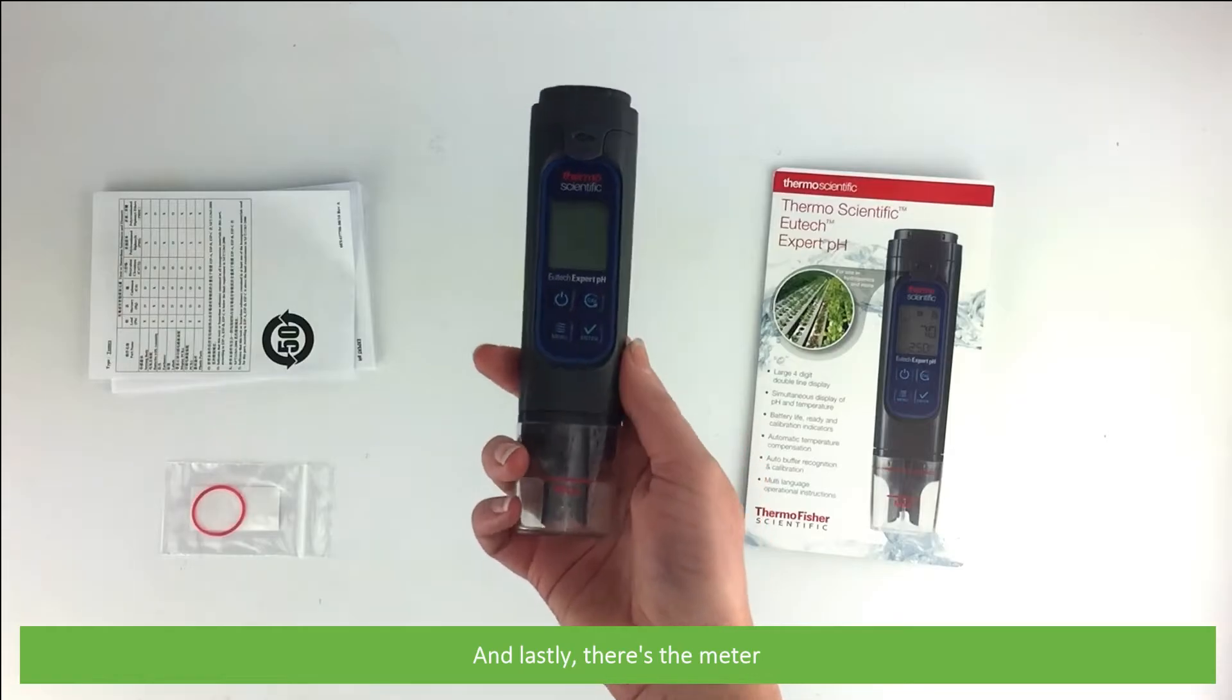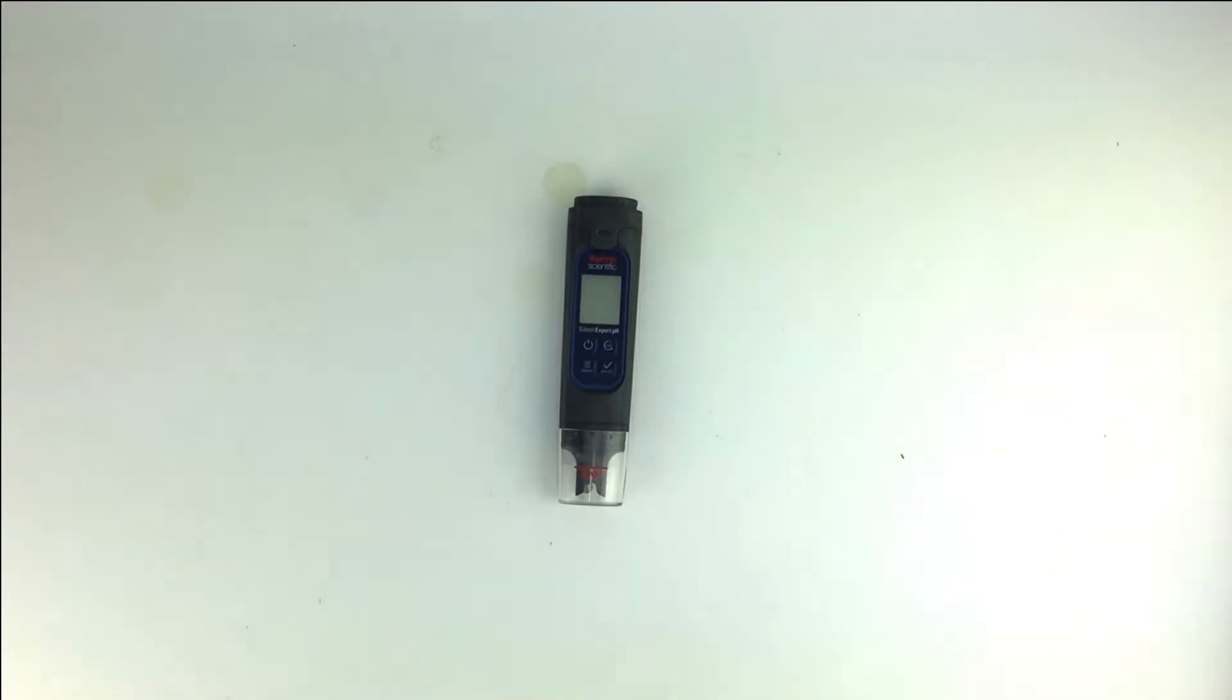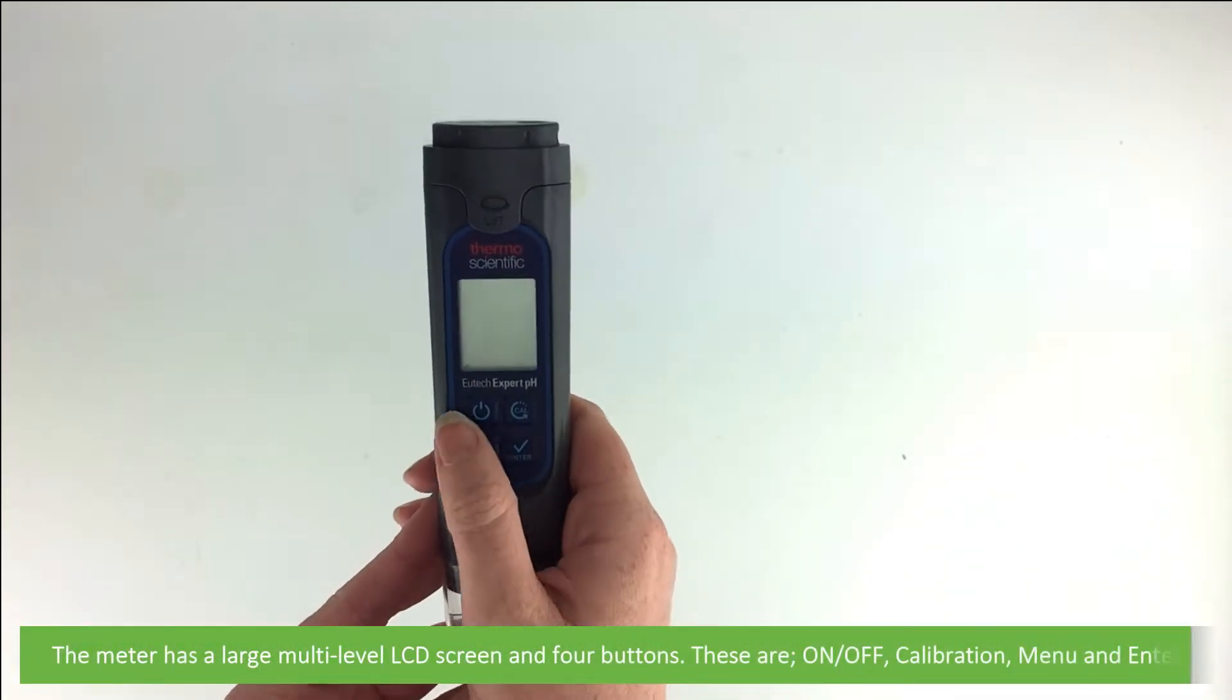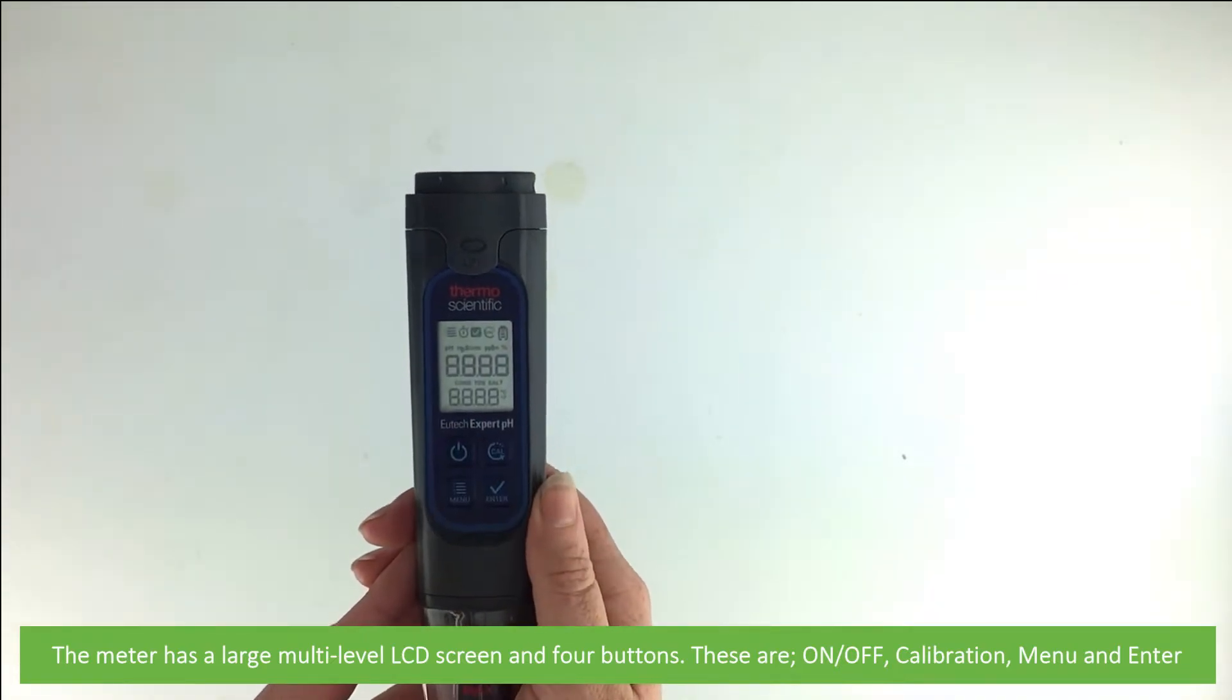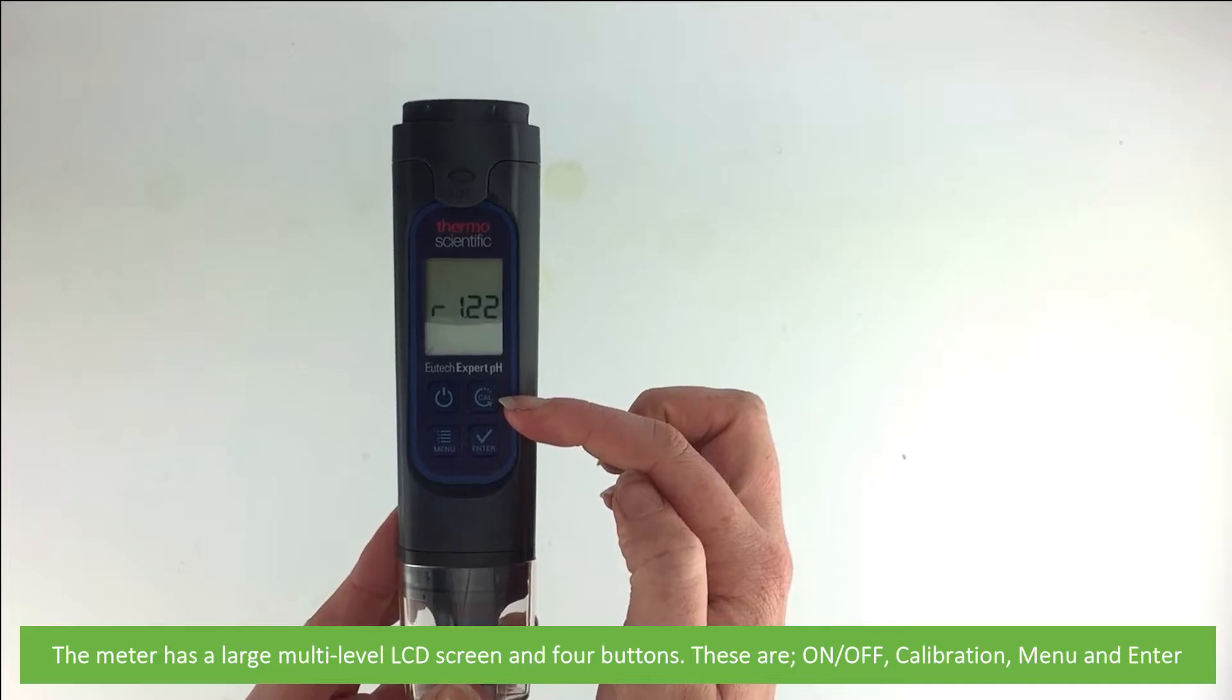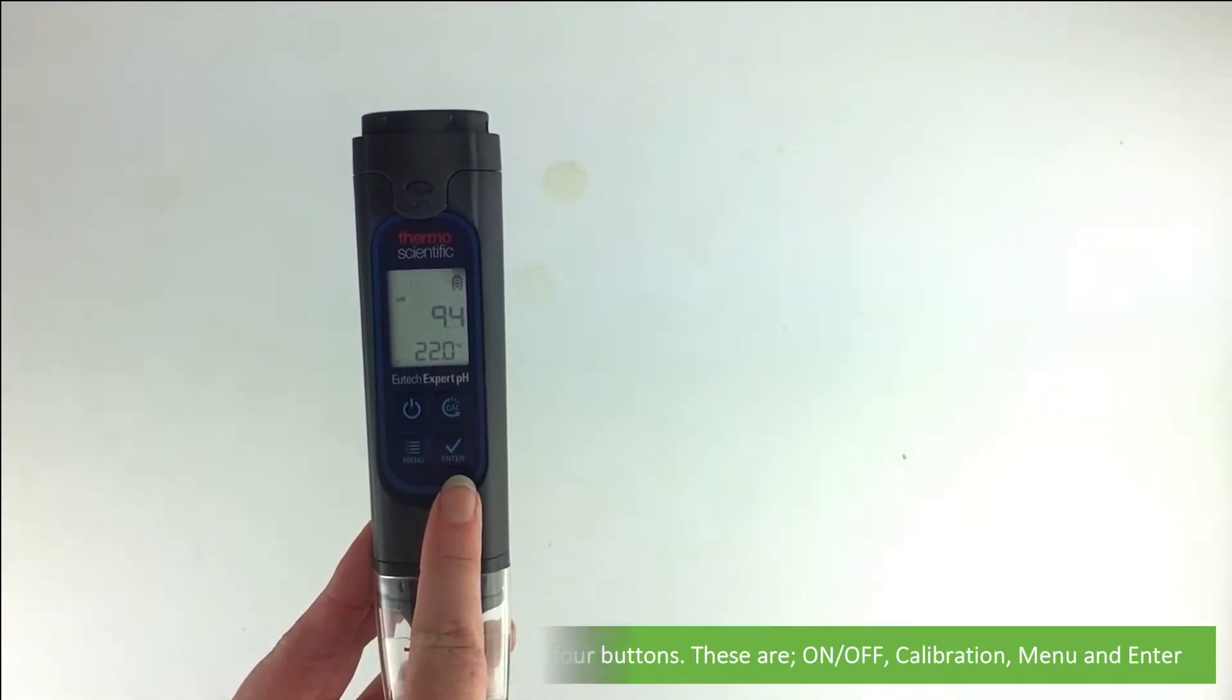And lastly there's the meter. The meter has a large multi-level LCD screen and four buttons. These are on-off, calibration, menu, and enter.